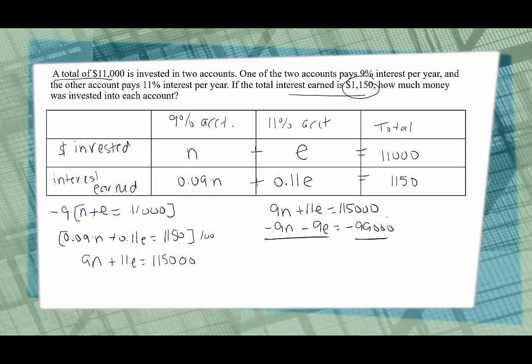Now that should eliminate the N's, which it does. Those cancel. 11E minus 9E is 2E. 115,000 minus 99,000 is 16,000. Now I can get E by itself by dividing both sides by 2, and we figure out that there is $8,000 invested in the account that pays 11%. So there's $8,000 there.